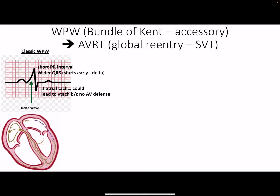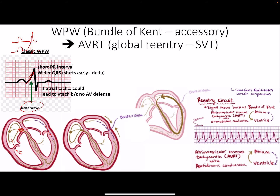Wolff-Parkinson-White (WPW) occurs in about 0.1% of people. There's an accessory pathway — the bundle of Kent — that bypasses the AV node. This can be bad because during atrial tachycardia, there's no AV nodal gatekeeper, which can induce ventricular tachycardia. Because we skip the AV delay, ventricular contraction is initiated slightly earlier, causing the QRS to come up prematurely — this is called a delta wave.